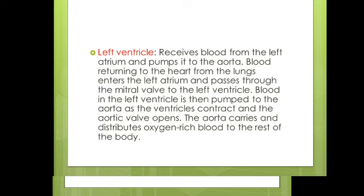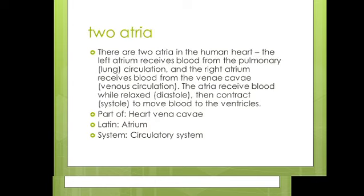The human heart has two atria: the left atrium and the right atrium. The left atrium receives blood from pulmonary circulation, and the right atrium receives blood from the venae cavae, which is the main systemic venous circulation. The atria receive blood and pass it to the ventricles.